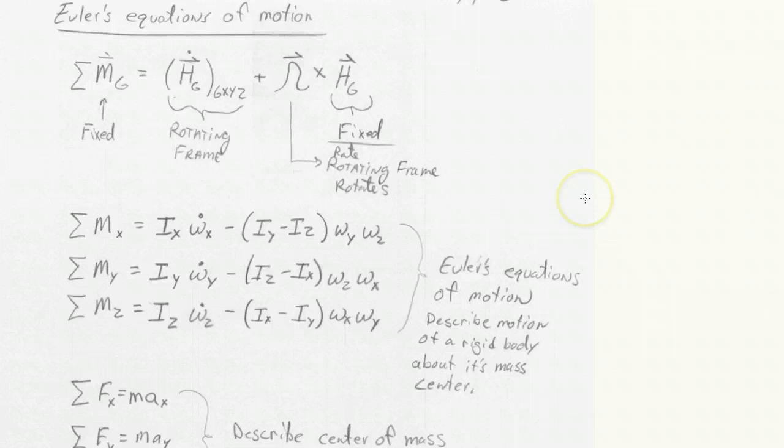And these equations are somewhat the culmination of this course. Because we set out to explain the motion of a body. And here it is. We've got two sets of equations, the Euler's equations and then the F equals MA equations, which describe the center of mass motion. And these equations completely describe the motion of any rigid body in three dimensions moving through space.